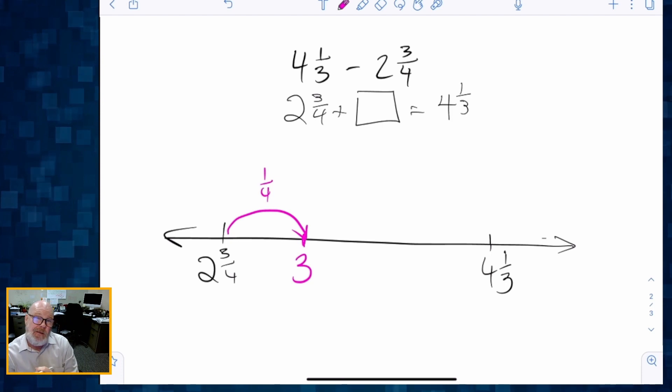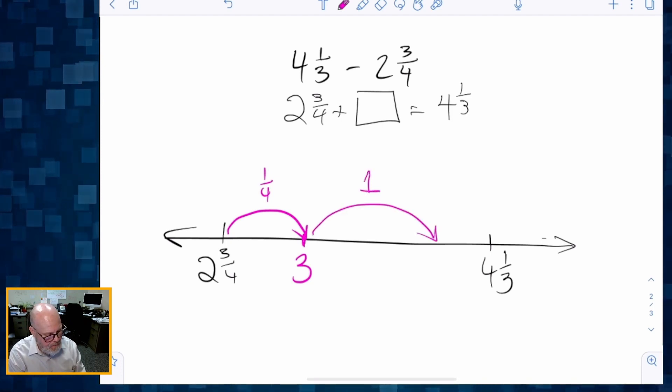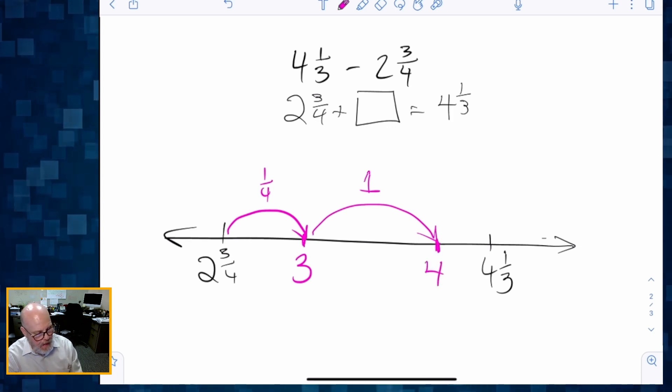I'm going to start by a little baby step of one fourth. That's going to put us to three and then I'm going to do a one whole step and that's going to give us to four. And then we only have one last little baby step of one third to go. And we now know the distance.